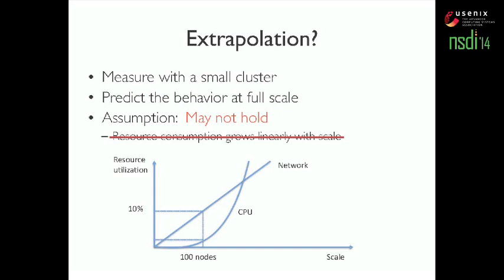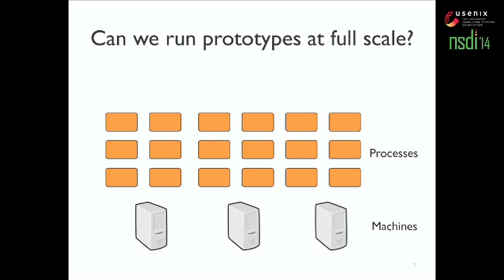Sometimes a problem only occurs when the scale of the system reaches a certain limit. Sometimes resource consumption grows super-linearly with scale, and that trend is not obvious when the system is small. So we are wondering: can we give up these inaccurate approaches and really run our prototypes at full scale?